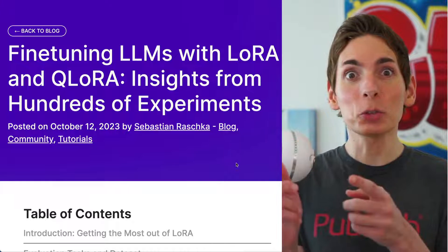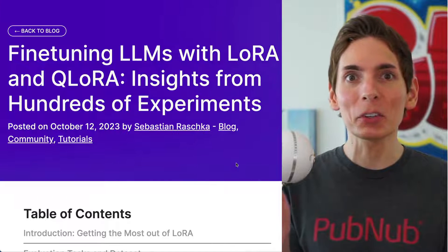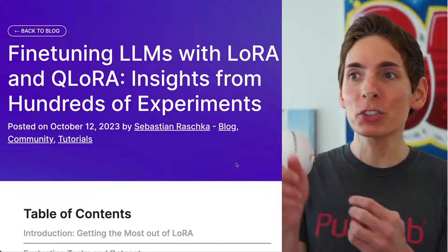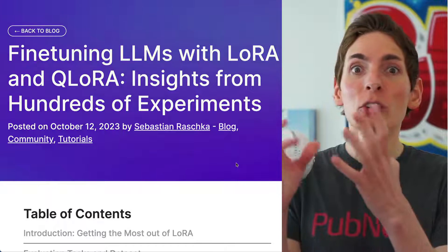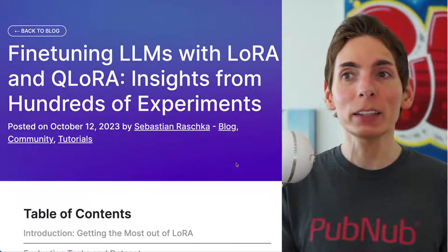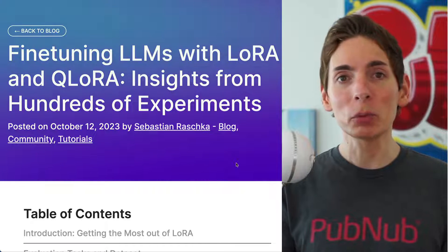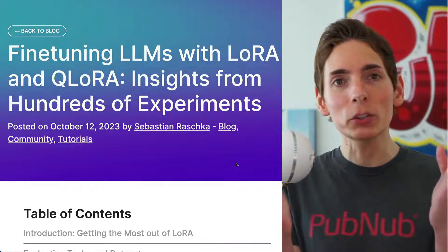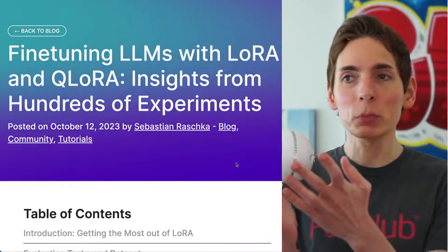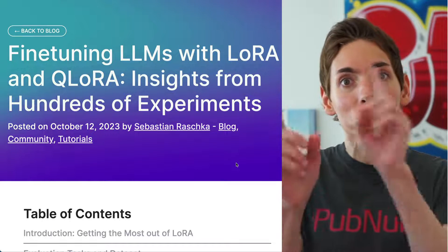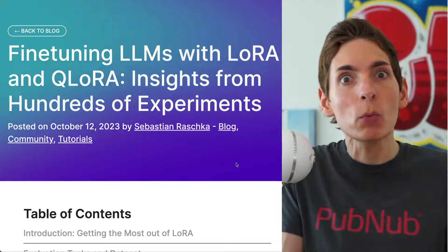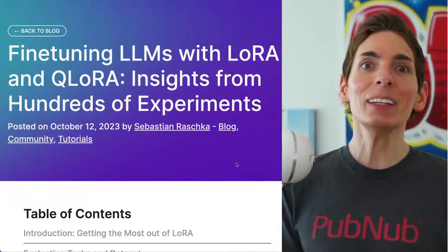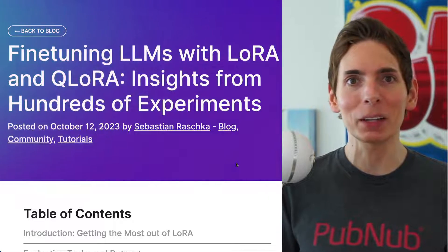Fine-tuning large language models can be tricky because there are so many various parameters and approaches. Sebastian Raschke has run hundreds of experiments and we find some good tips here. One neat thing is that you can fine-tune one of these large language models — a 7 billion parameter model — on a single GPU within just a few hours. That means we can do all kinds of things in a very short amount of time.